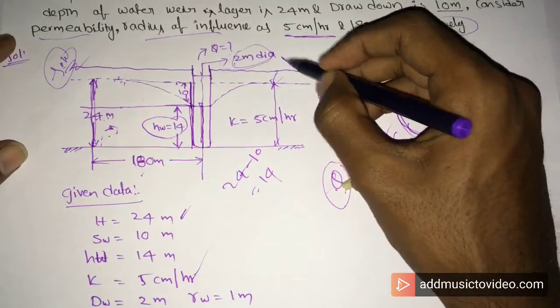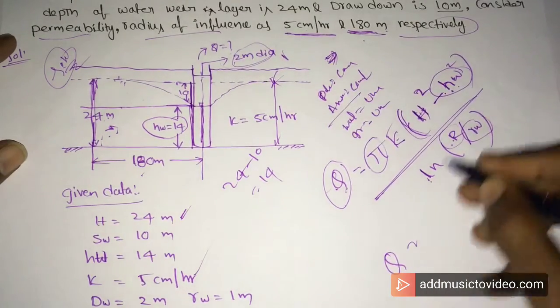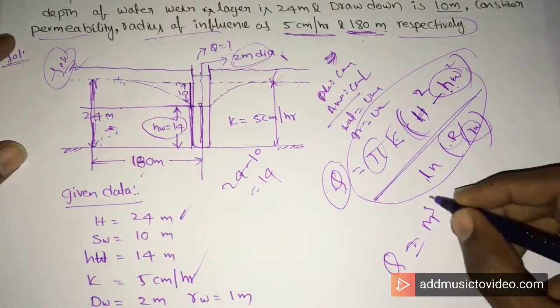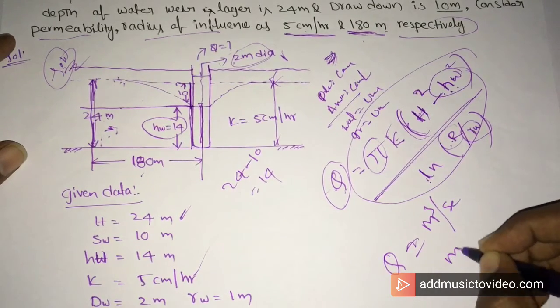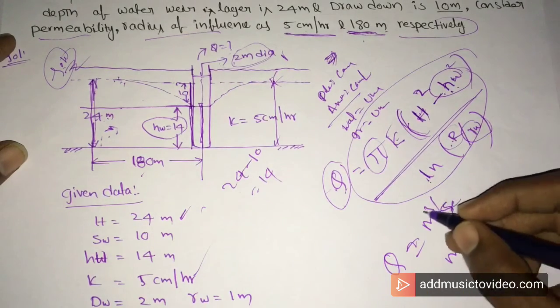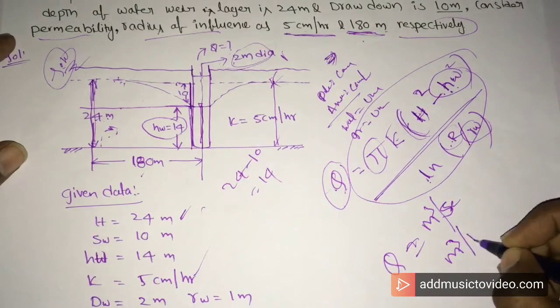So you can calculate the value, which equals 80 cubic meters per hour.